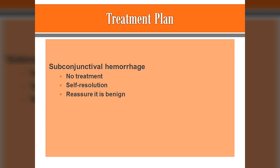The treatment plan is very simple — there is no treatment. It's usually self-resolving. The patient needs to be reassured that this is definitely a benign condition and there isn't anything they can do to make it resolve on their own; it just has to run its course. Compresses sometimes can be used but don't help very much. Explaining to them that in about one to two weeks they should start seeing the eye go from blood-red to a yellow color — that's when the healing process is occurring.